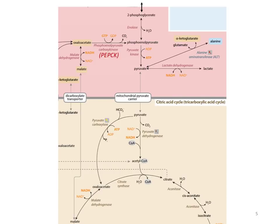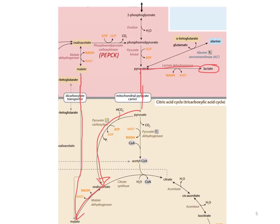This image shows the first steps of gluconeogenesis on the metabolic map. Starting with lactate: during exercise, one of the key roles of the liver is to take up lactate released from exercising muscle, convert it back to pyruvate, which enters the mitochondria through the mitochondrial pyruvate carrier. It then gets carboxylated by pyruvate carboxylase to oxaloacetate. Oxaloacetate can't leave the mitochondria, so it gets reduced to malate, which can leave through a transporter. Now we have malate in the cytosol, which can be oxidized back to oxaloacetate. Then PEPCK converts the oxaloacetate to phosphoenolpyruvate, and we go back through all those common steps of glycolysis.